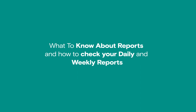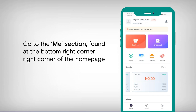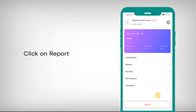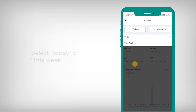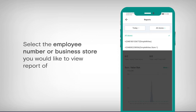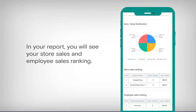What to know about reports and how to check your daily and weekly reports. Go to the Me section found at the bottom right corner of the homepage. Click on Reports. Select Today or This Week. Select the employee number or business store you would like to view a report of. In your reports, you will see your store sales and employee sales ranking.